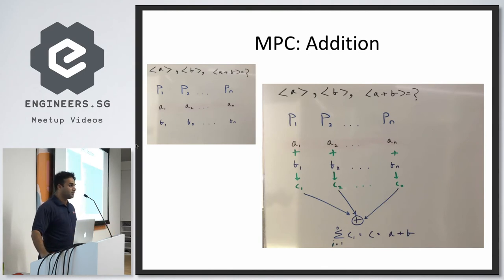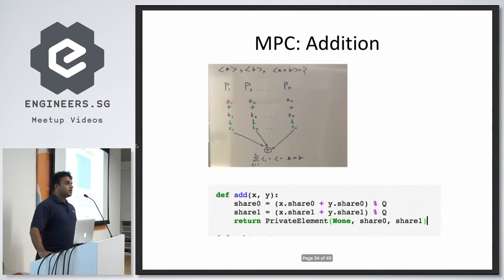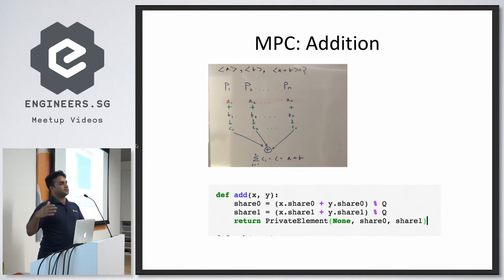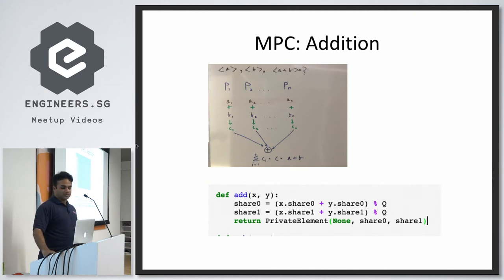That's a really simple protocol — what's called the SPDZ protocol in multiparty computation, often pronounced 'speeds.' In code, add(x, y): share_0 = x.share_0 + y.share_0 mod Q; share_1 = x.share_1 + y.share_1 mod Q (assuming two parties, generalizable to N); then return a PrivateElement initialized with share_0 and share_1, containing the addition result.